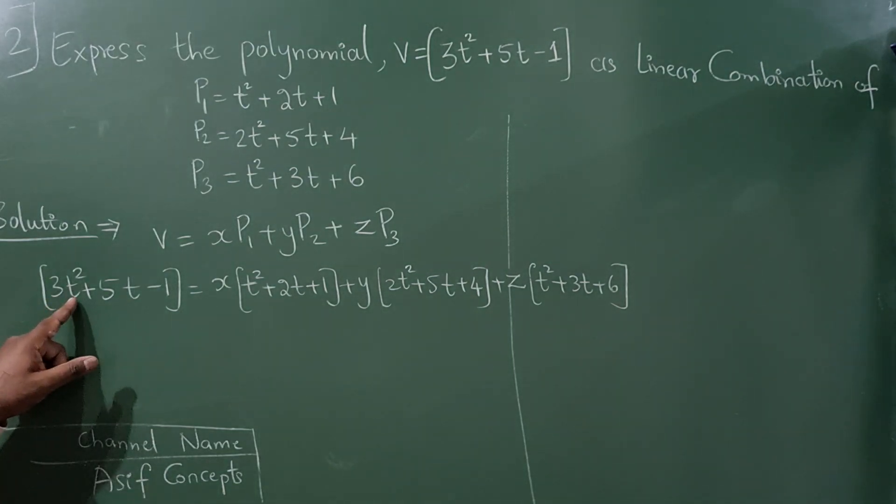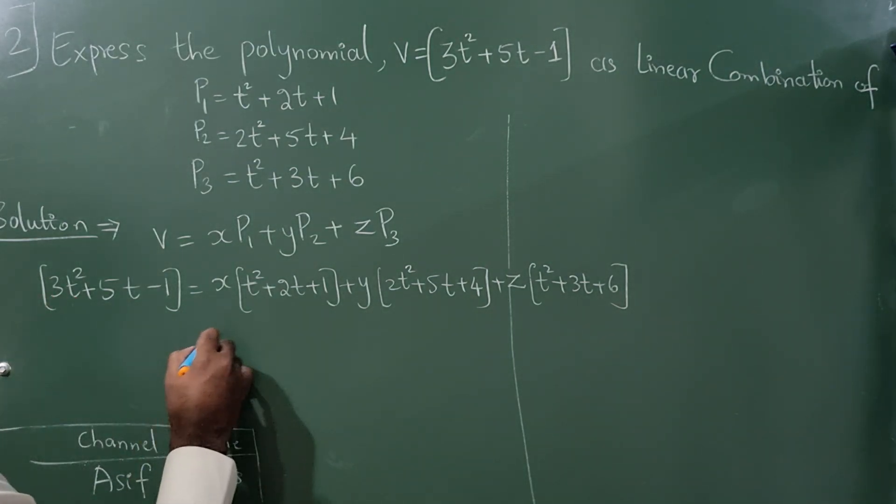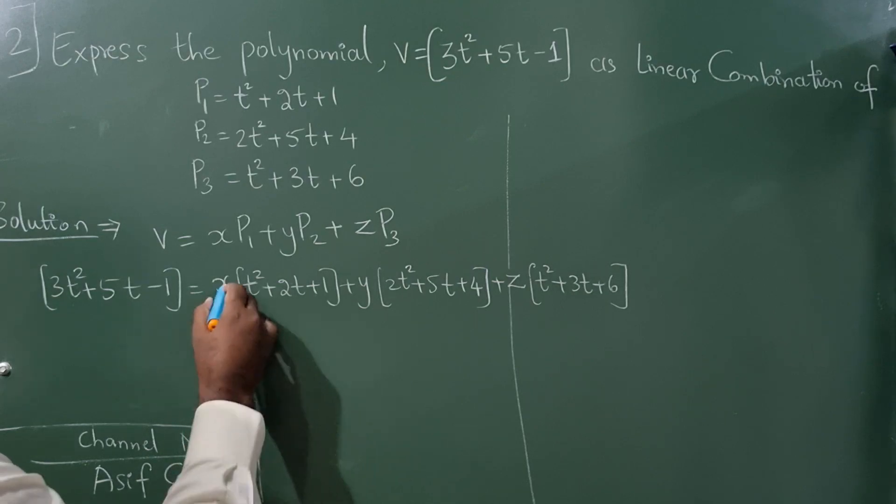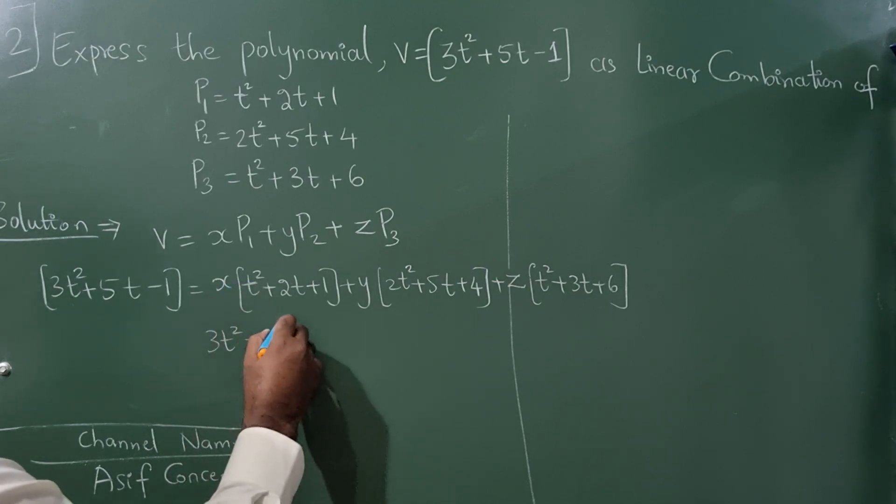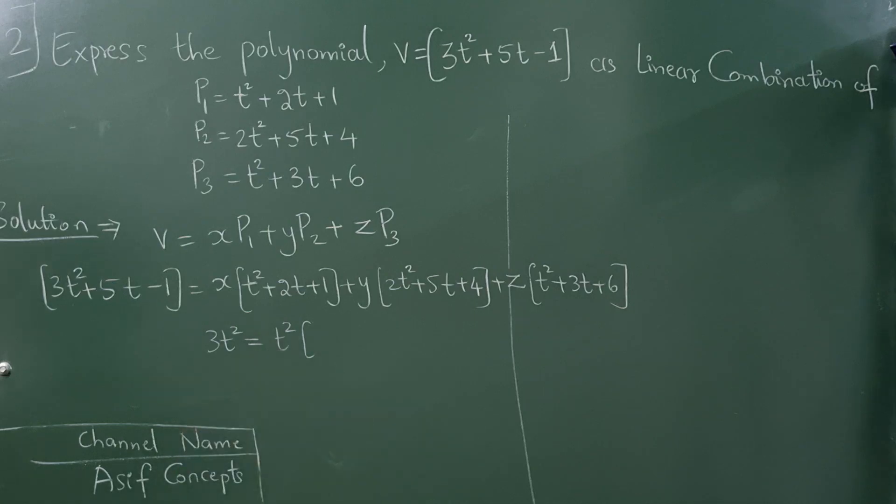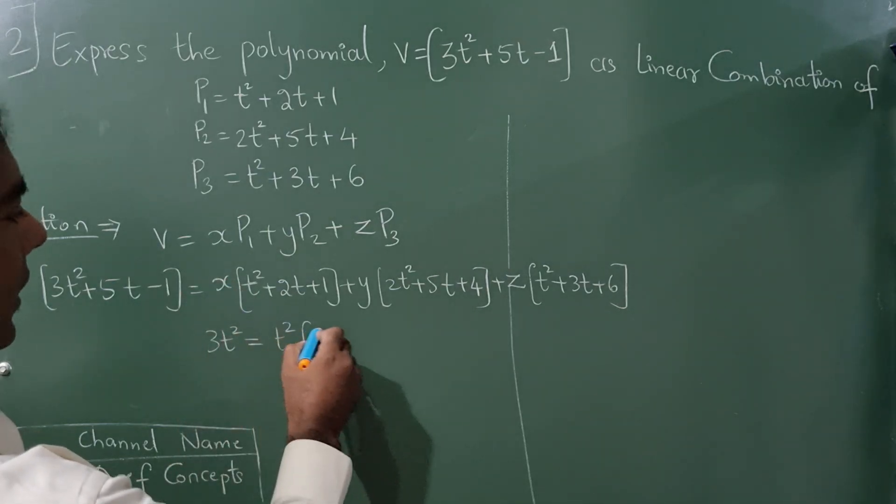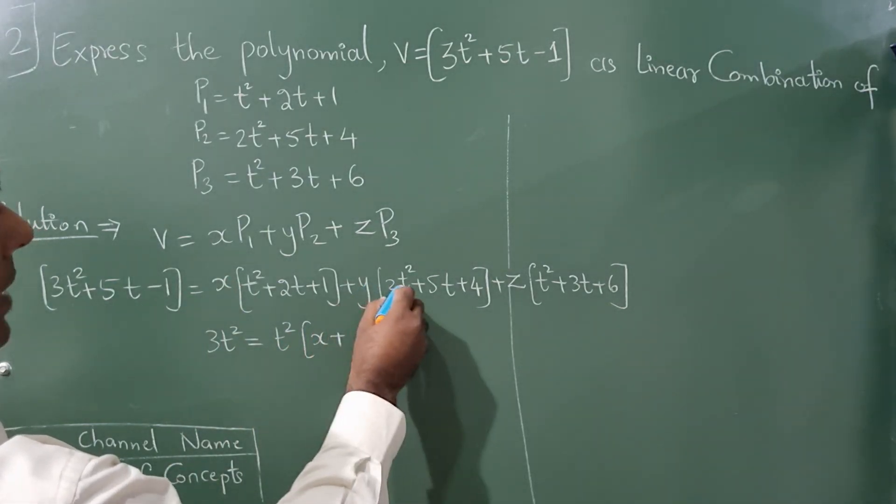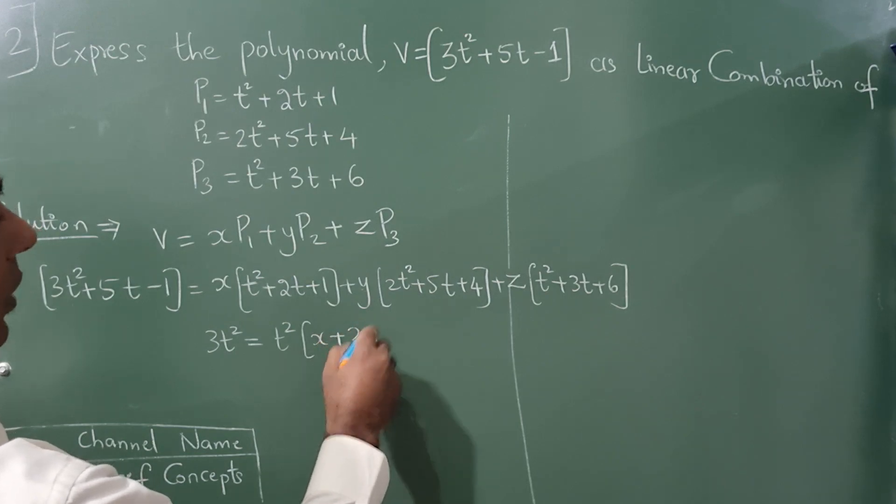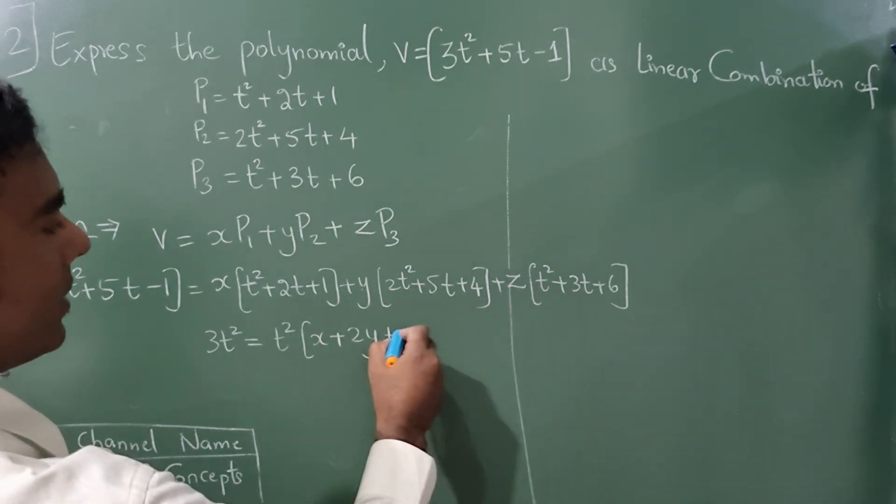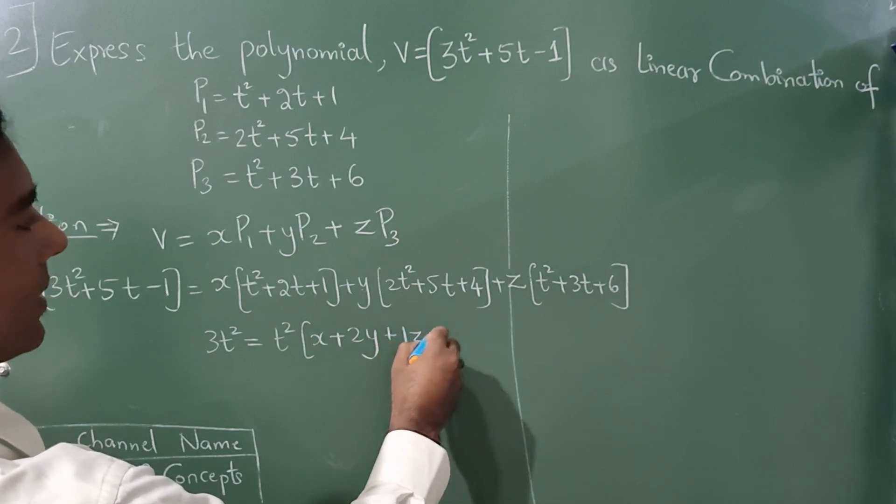Here the coefficient for t² is 3. I will write here t² and you can see x plus 2y and here it is z.